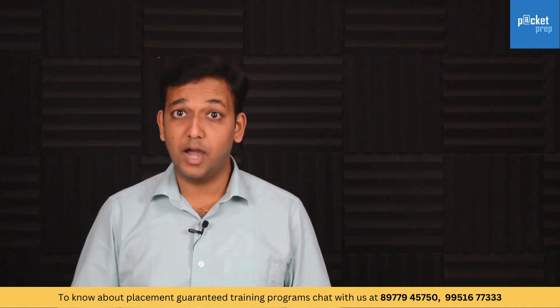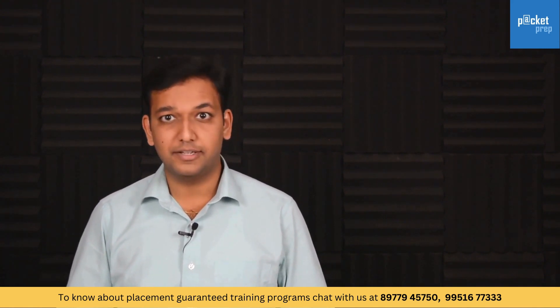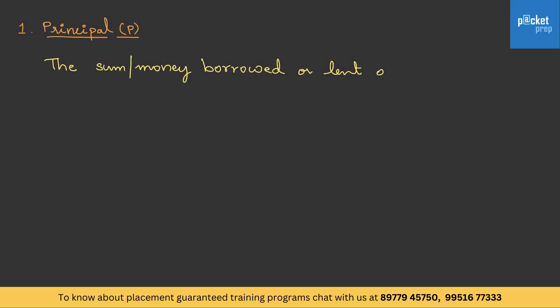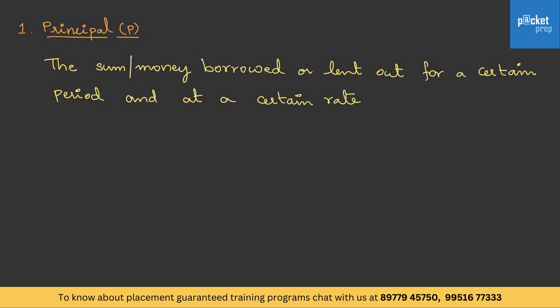To understand how it works, let's get into this topic. The first term is Principal — it is the sum of money which is borrowed or lent out for a certain period of time at a certain rate. The second is Rate of Interest R — it is the rate at which money is borrowed or lent out.